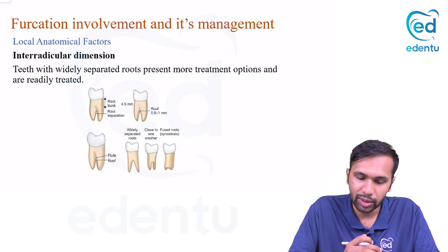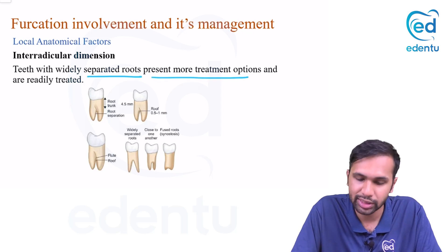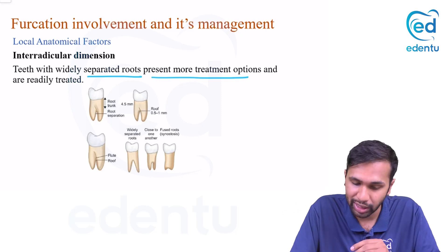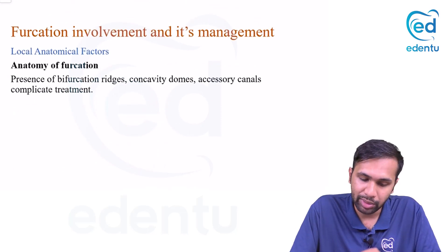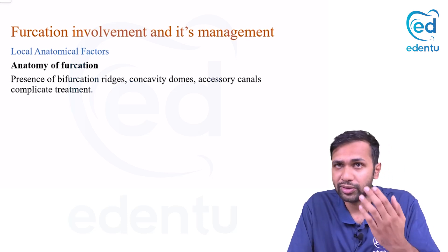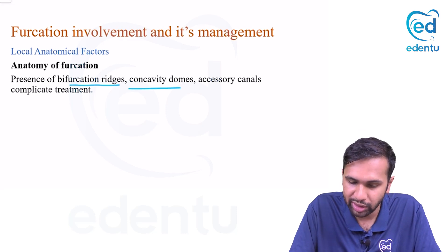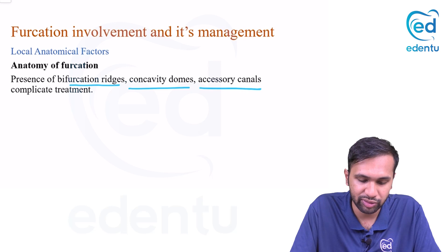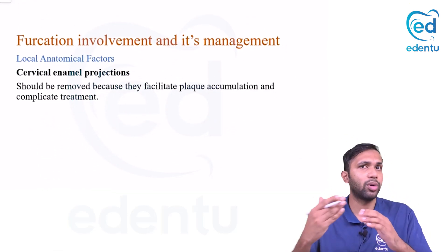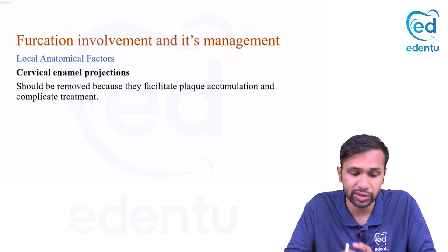Regarding interradicular dimension: teeth with widely separated roots present more treatment options and are more readily treated compared to roots which are narrow or very close together. Regarding furcation anatomy: presence of bifurcation ridges, concavities, domes, and accessory canals all further complicate treatment and worsen prognosis. If all these factors are present, you may consider extraction or root resection over conservative treatment.